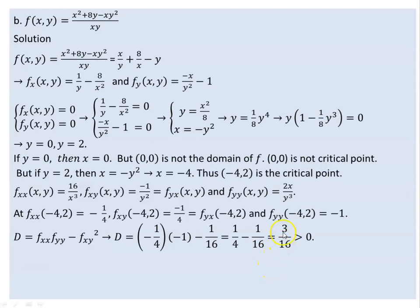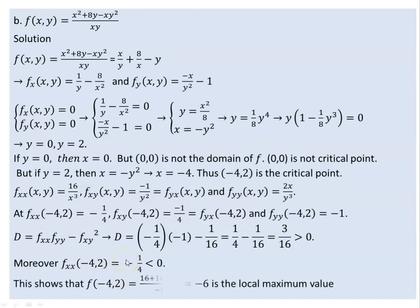The discriminant D is positive, and Fxx at (−4, 2) equals negative 1/4, which is negative. Since D is positive and Fxx is negative, the point (−4, 2) is a local maximum.